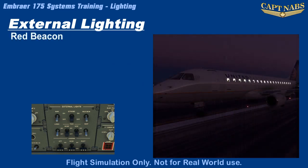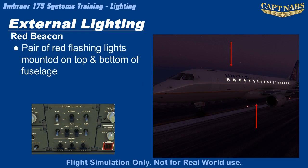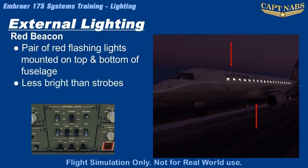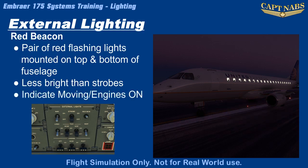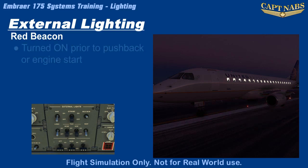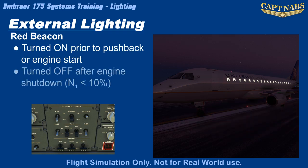The red beacon is a pair of lights mounted on the top and bottom of the fuselage near the center of the aircraft. Unlike the white strobes, the flashing of the beacons, while still attention-getting, is not as blinding. The red beacon is usually used to indicate that an aircraft is moving or has engines running. It is normally turned on just prior to pushback or engine start, whichever occurs first, and is turned off once engines are switched off and engine speed decreases below a certain threshold, usually 10% N1. Ground crew will not usually approach an aircraft until the beacon is turned off, indicating it is safe to approach.